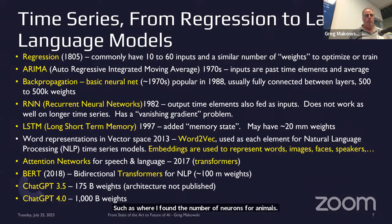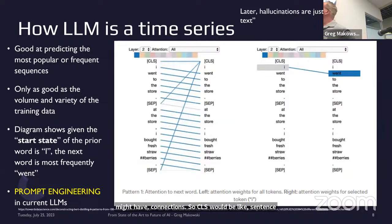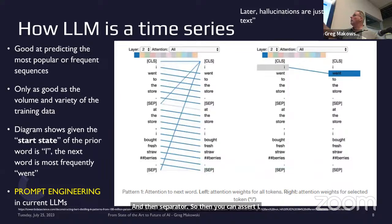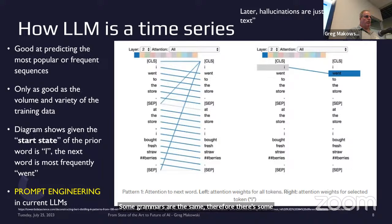How a large language model is a time series: breaking it down in very small steps. CLS would be like a sentence period or beginning of a sentence. You have connections between different words, then a separator. You assert 'I' — what's the next most probable word? 'I went' could be very probable. So it's just doing time series steps. By looking at lots and lots of text, it picks up the grammar of English, which is different than French, which is different than other languages. Some grammars are the same, therefore there's some transfer learning — just like a student might go from English to Spanish to Italian but stumble in Japanese because of grammar similarities.